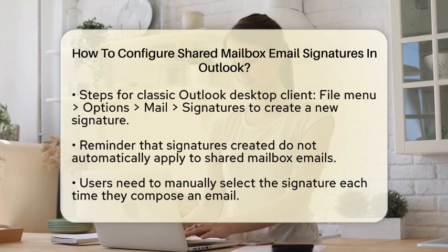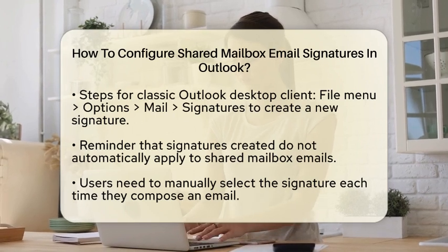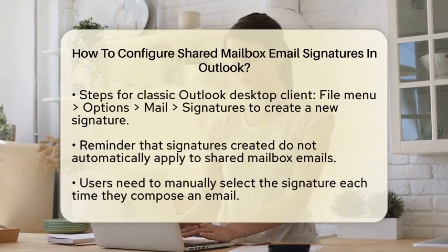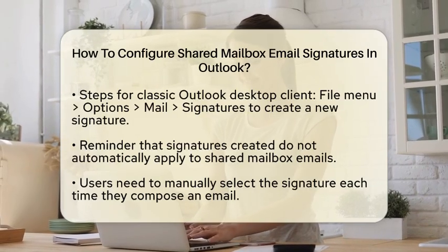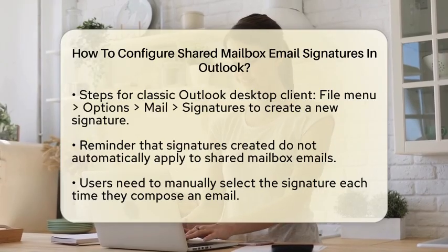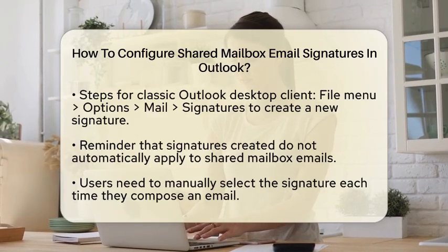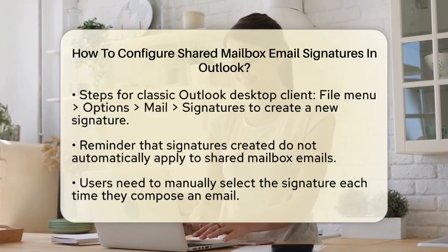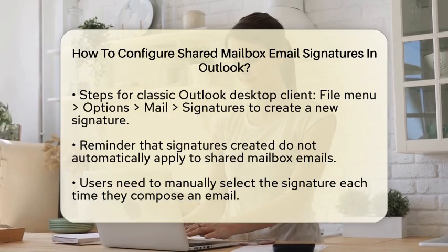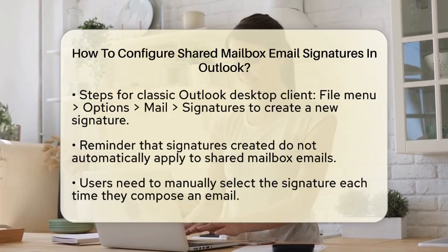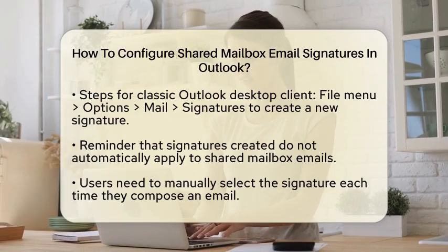For users of the classic Outlook desktop client, start by going to the File menu. Click on Options, then Mail, and finally Signatures. Here, you can create a new signature. However, remember that this signature will not automatically apply when you send emails from the shared mailbox. You will need to manually select it each time you compose an email.